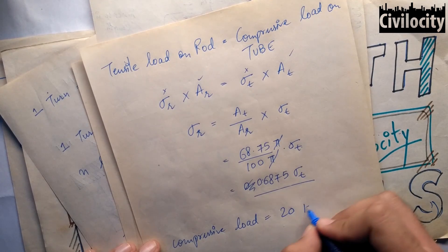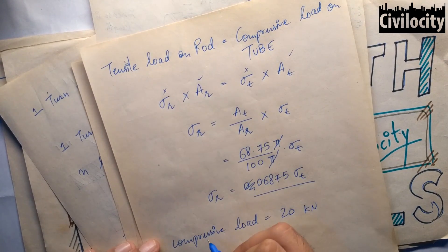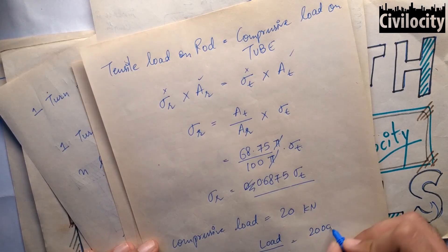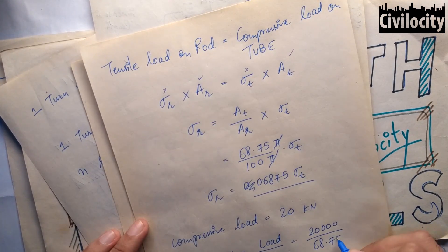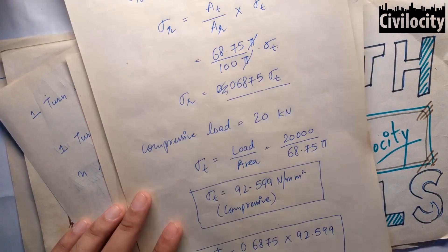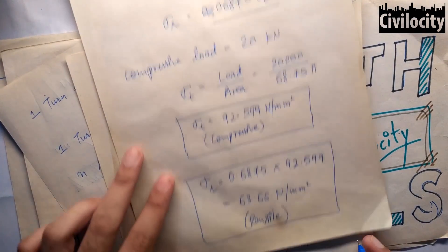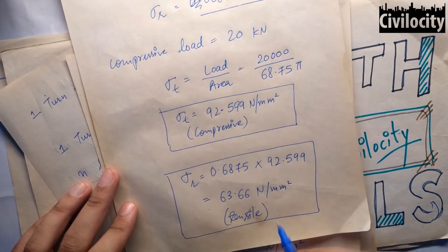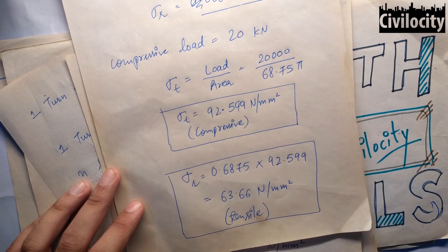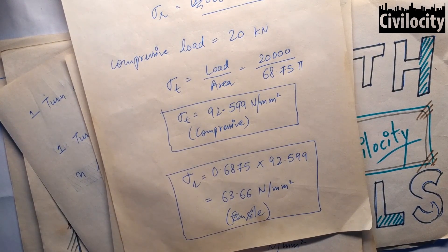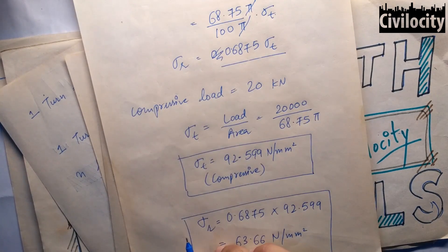Using stress equals load divided by area, the stress in the tube is 20,000 divided by 68.75 pi, which gives 92.599 N/mm² compressive. Substituting this into sigma_r equals 0.6875 times sigma_t gives sigma_r equals 0.6875 times 92.599, which equals 63.66 N/mm² tensile. This completes Part 1 — the stresses due to the 20 kN load.